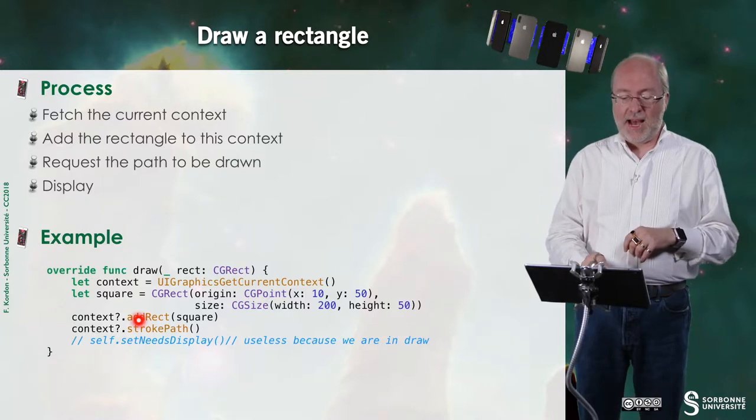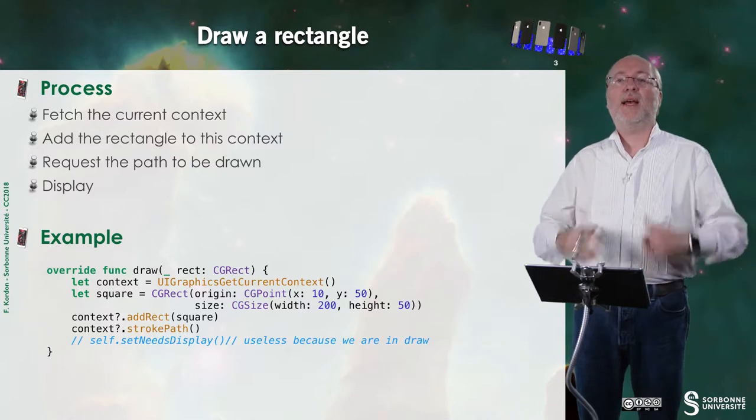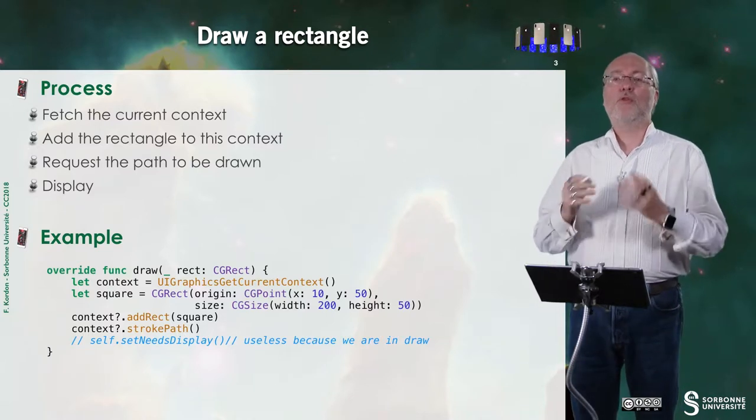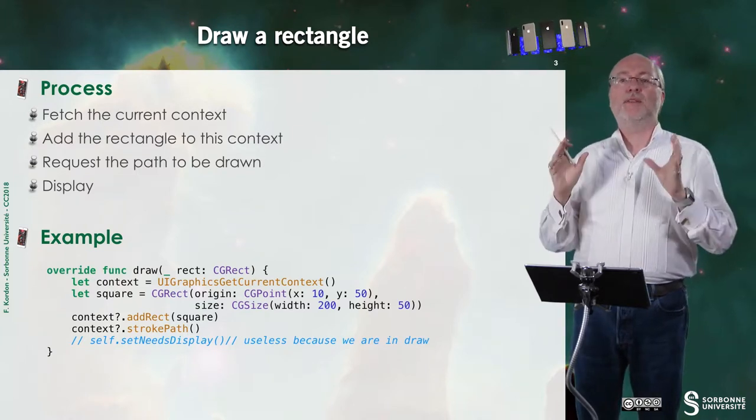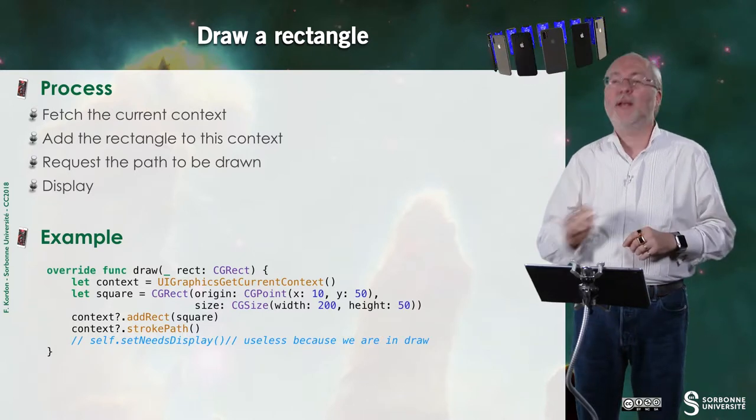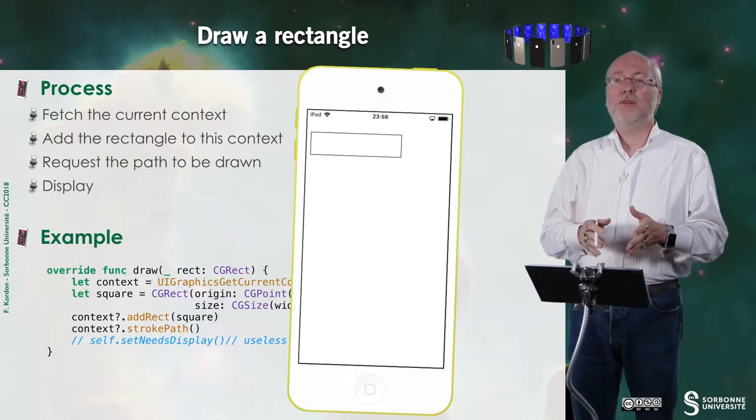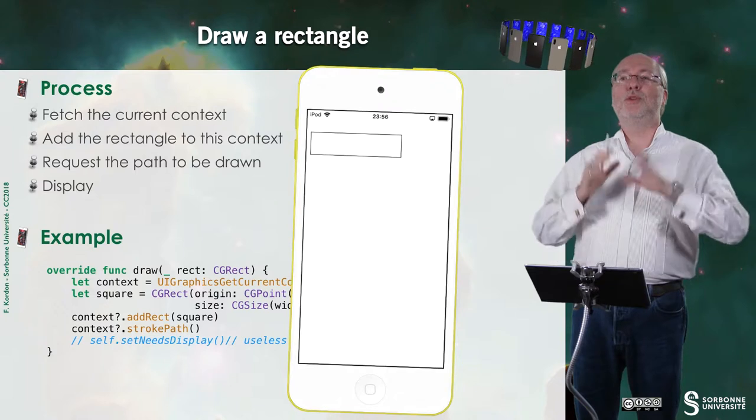Then I add the square to the context, and I ask my context to stroke the path. Stroke path means I will just draw the lines of this path. And since this path is a rectangle, it will display a rectangle like this. So this code shows this. It's ugly, I know, but it's just an example.